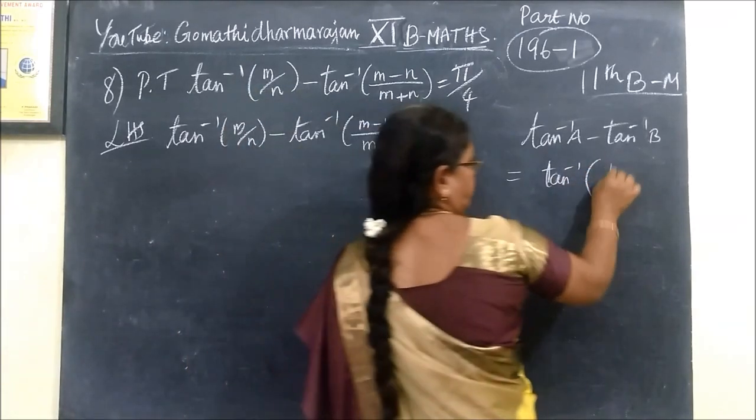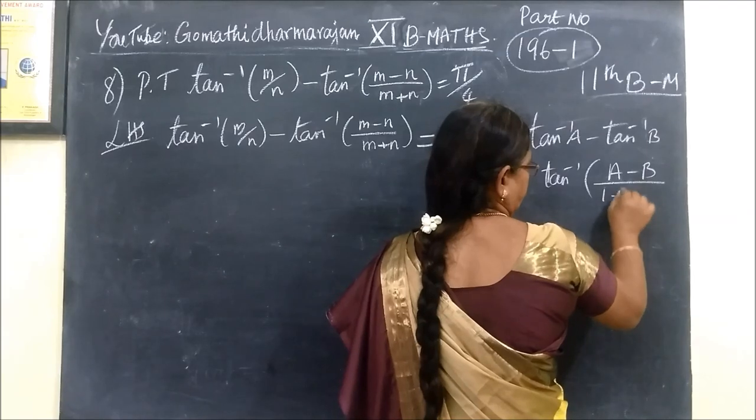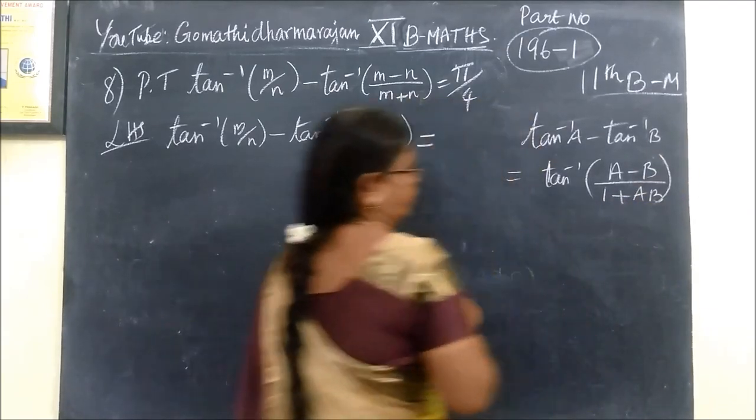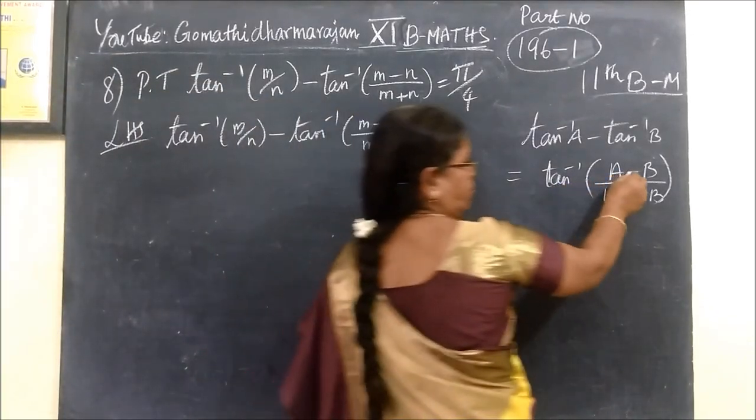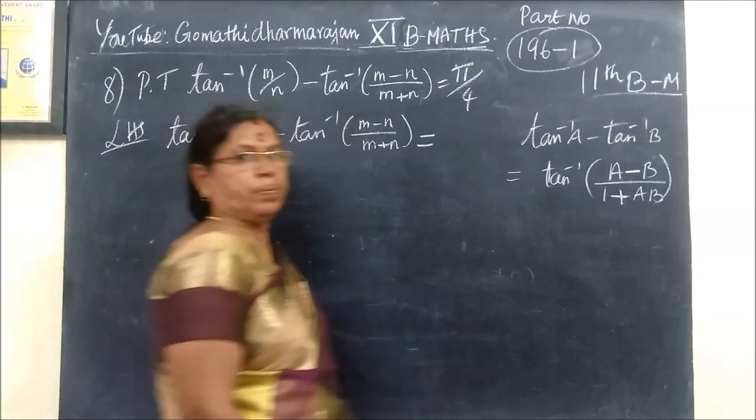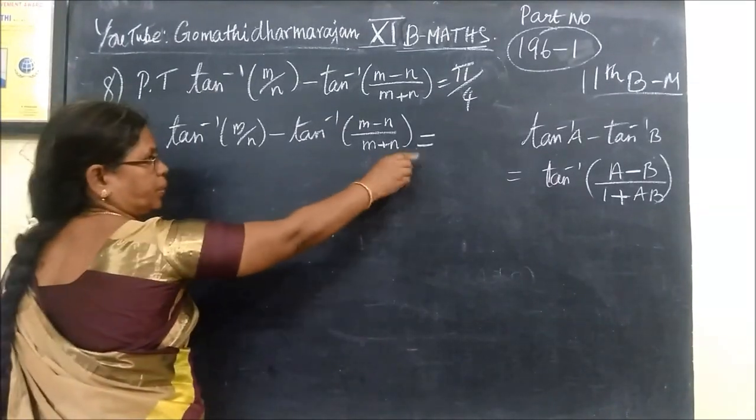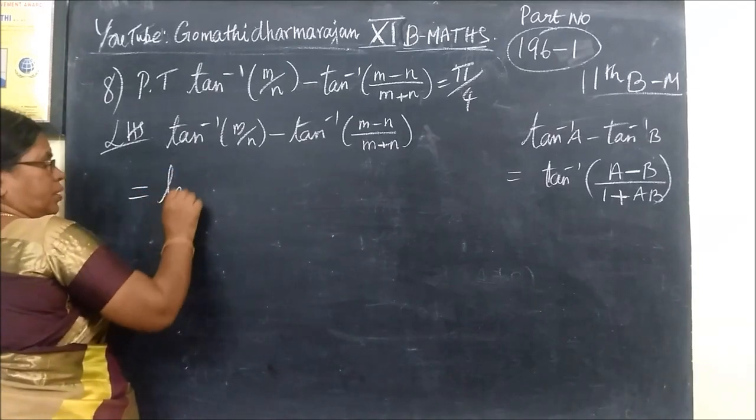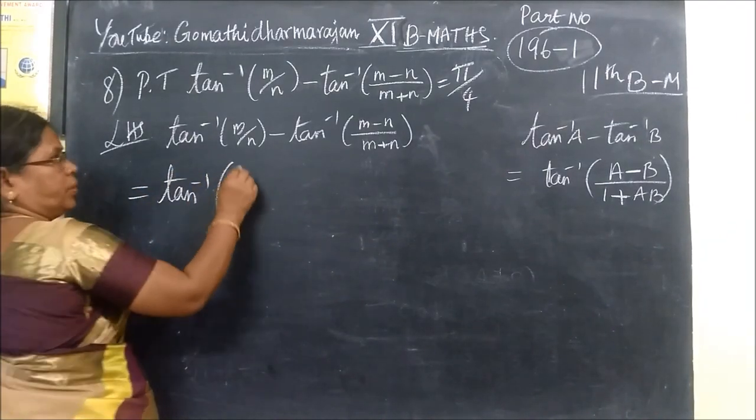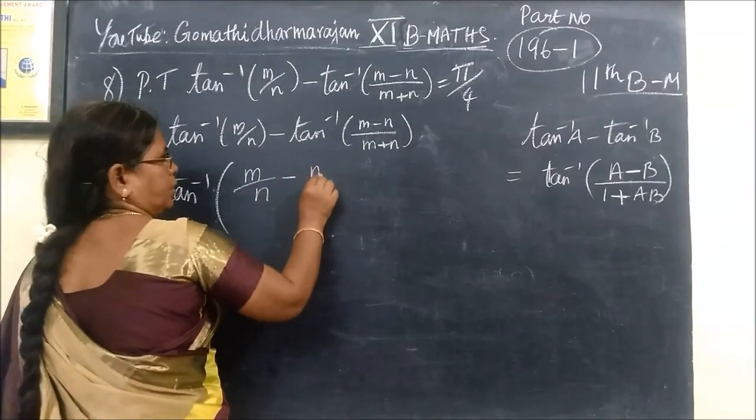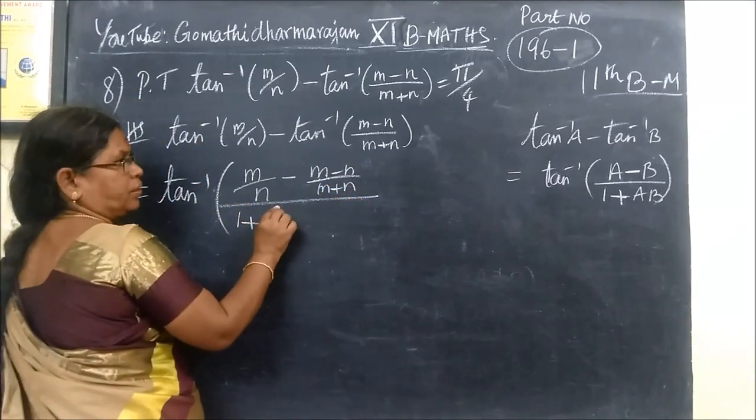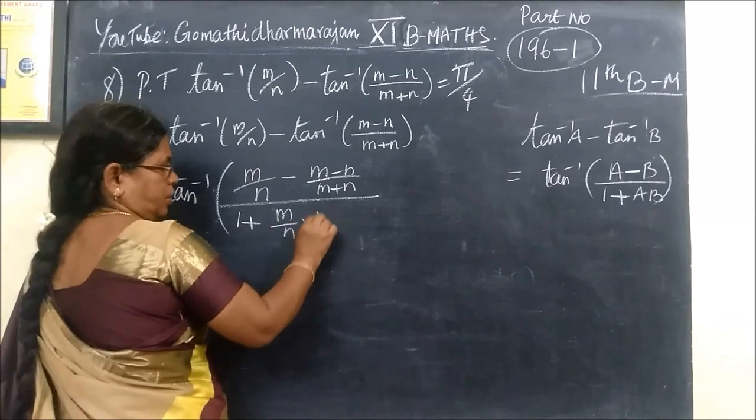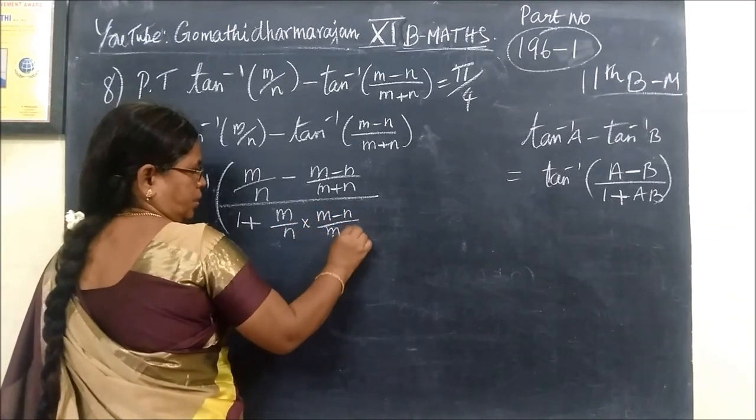Equal to tan inverse of A minus B by 1 plus AB. Then we can write this form of tan inverse of A is m by n minus B is m minus n by m plus n, by 1 plus AB, m by n into m minus n by m plus n.